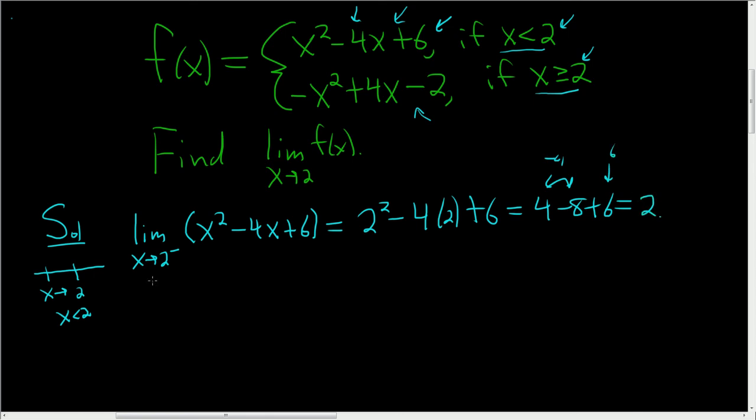All right, so now we have to compute the limit from the right. As x approaches 2 from the right, x is bigger than 2, so here we have -x² + 4x - 2.